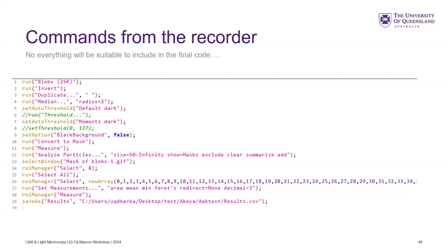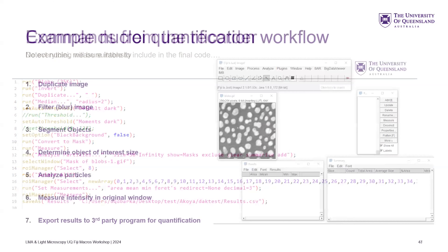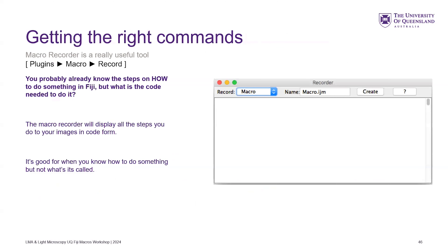This is one way to develop the code, because you probably know what you want to do. When you're testing, you might have to go through a number of steps — which threshold should I use? What cutoff size should I use? You'll be doing these anyway, so get in the habit of opening the recorder window because it's useful.